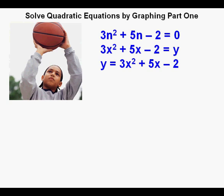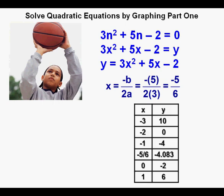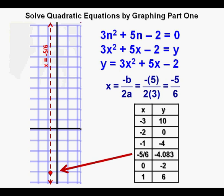He locates the axis of symmetry using the formula x = -b/2a and with an a of 3 and b of 5, this is what he gets, an axis of symmetry of x = -5/6. Here is a table with the vertex and all the other adjacent values filled in. Here is the axis of symmetry of x = -5/6 with the vertex of (-5/6, -4 1/12).